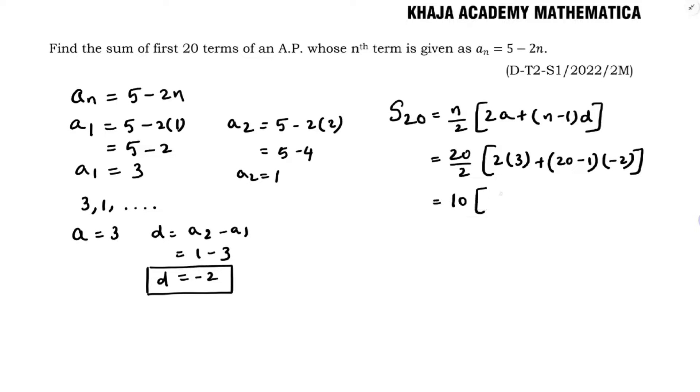20 by 2 is 10 and 2 into 3 is 6 plus 19 into minus 2. 10 into 6 minus 38.